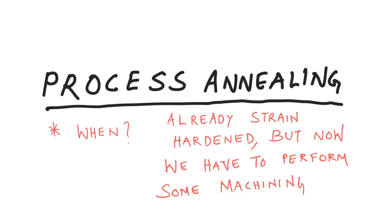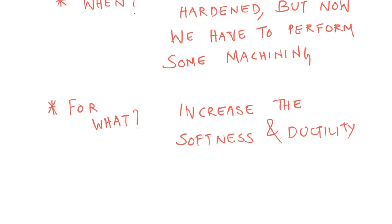One type of annealing is process annealing. We perform process annealing when the material is already strain hardened — the strength has gone up but there is a significant reduction in ductility and the material is harder. If I need to perform some machining that involves excessive plastic deformation, I have to improve the softness of the material, so process annealing is recommended to increase softness and ductility.